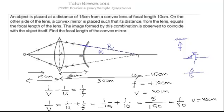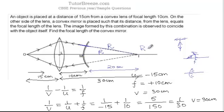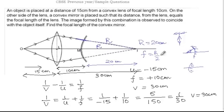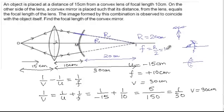From our calculations we can see that this distance is 20 cm, which means the radius of curvature of the mirror is 20 cm. And the focal length is half the radius of curvature, so that is going to be 10 cm.